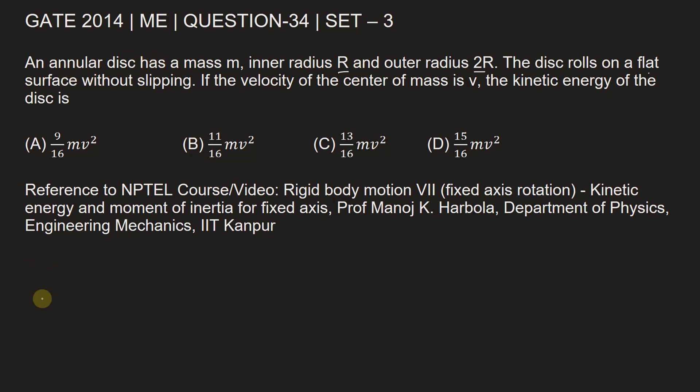For an annular disc, we can write the given things. It is given that inner radius r1 is capital R and the outer radius r2 is 2 times capital R.